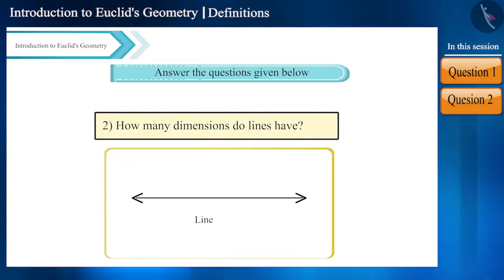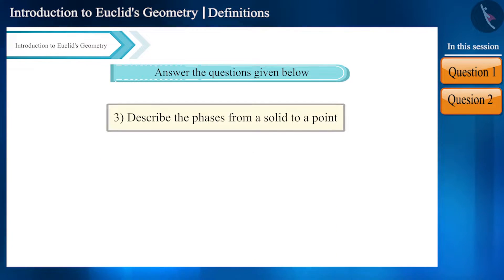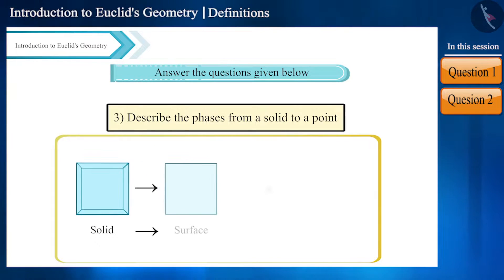Third question: friends, we know the phases from a solid to a point. Boundaries of a solid is a surface, boundaries of a surface is a line, and line ends in a point. Therefore the phases will be solid, surface, line, and point.